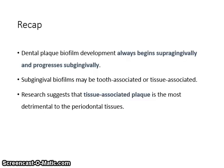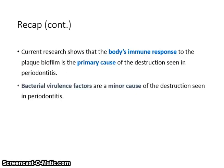In summary: Dental plaque biofilm development always begins supra-gingivally and progresses sub-gingivally. Subgingival biofilms may be tooth-associated or tissue-associated. Research suggests that tissue-associated plaque is the most detrimental to the periodontal tissues. Current research shows that the body's immune response to the plaque biofilm is the primary cause of the destruction seen in periodontitis. Bacterial virulence factors are a minor cause of the destruction seen in periodontitis.